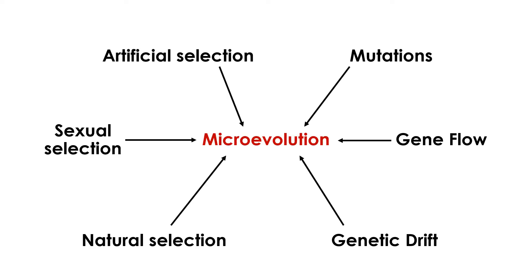So, how and why do populations change over time? Overall, there are six main causes of microevolution: mutations, genetic drift, gene flow, natural selection, sexual selection, and artificial selection.